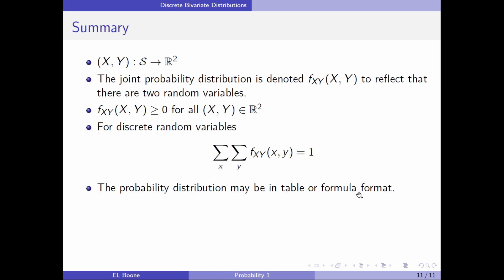Quick summary here: (X, Y) is a function from our sample space to the real plane. We call it a joint probability distribution to reflect that there are two random variables, in this case two. f_XY(X, Y) must be greater than or equal to zero for all (X, Y), and when we add them all up, it has to come out to one. The probability distribution may be in table or formula format. We're going to look at the continuous version next, and this is where calculus kicks back in. If you're not that happy with calculus, you can still watch it anyway because maybe it'll help you improve your calculus, and if not, the answers are there anyway.